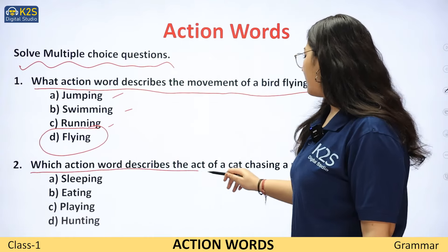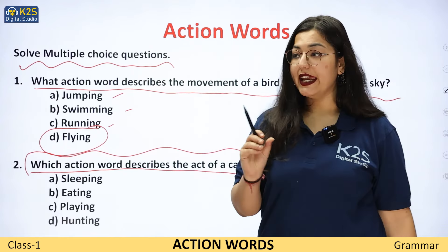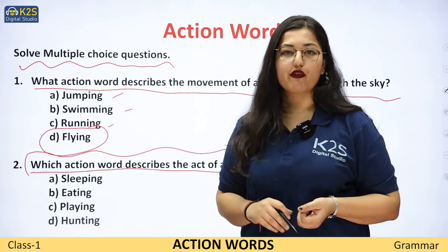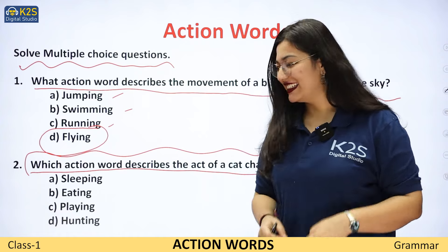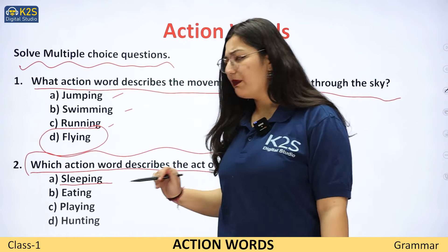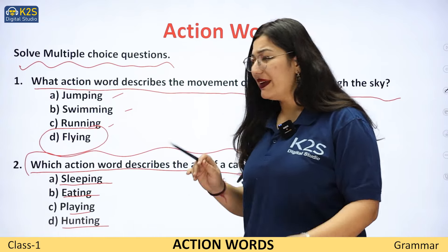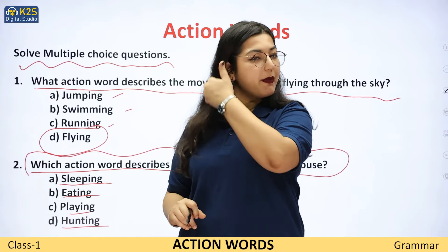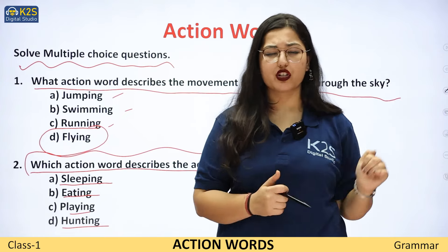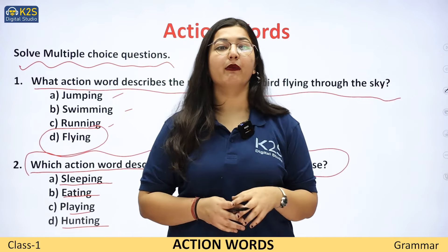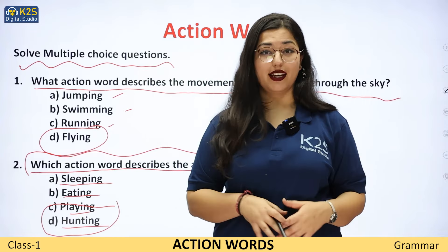'What action word describes the act of a cat chasing a mouse?' Ek billi, ek cat, mouse ko pakar rahi hai — mouse ko kyun pakadti hai? Iske liye khane ke liye. Cat eats mouse. Toh yahan par options hain: sleeping, eating, playing, hunting. Abhi woh pakad rahi hai. Jab hum animals pakad te hain, us process ko hum bolte hain hunting — shikar karna. Toh yahan par answer kya hoga? Hunting.